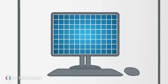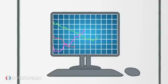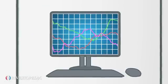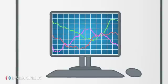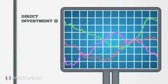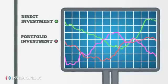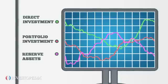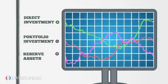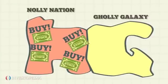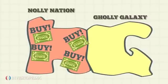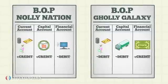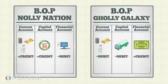Lastly, the financial account records payment flows related to the change of ownership in international financial assets and liabilities. The flows include direct investment, portfolio investment, and reserve assets, which are purchased and sold only by monetary authorities. When Nollians invest in foreign securities from Golly Galaxy, this affects a debit to Nolly's BOP and a credit to Golly's BOP account.